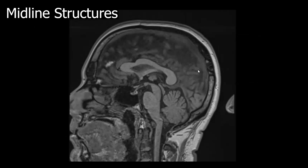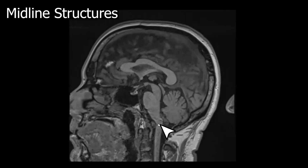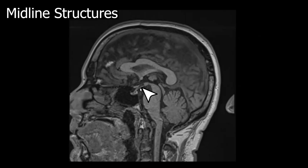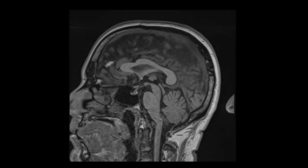This is a volumetric T1. Let's look at those structures again in a different patient: the cervical spine, cervical cord, cervical medullary junction, medulla, pons, midbrain, tectal plate, mammillary body, hypothalamus, pituitary infundibulum, optic chiasm, corpus callosum, and the fornix. Depending on the protocol, we may also have axial or coronal T1-weighted images in our scan as well.